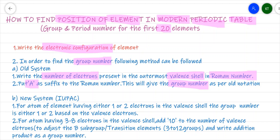Now, if you need to find the group number according to the new system as proposed by IUPAC, it is also very simple. Once again we go back to our electronic configuration. If an atom has one electron in the valence shell, its group number is 1; if it has two electrons in the valence shell, its group number is 2. So any element having either one or two electrons in the valence shell will have a group number of 1 or 2 respectively.